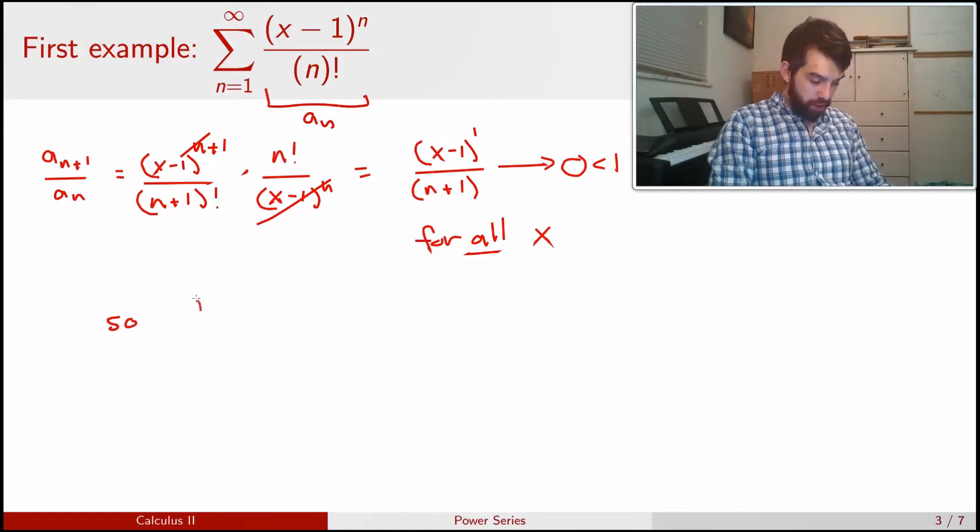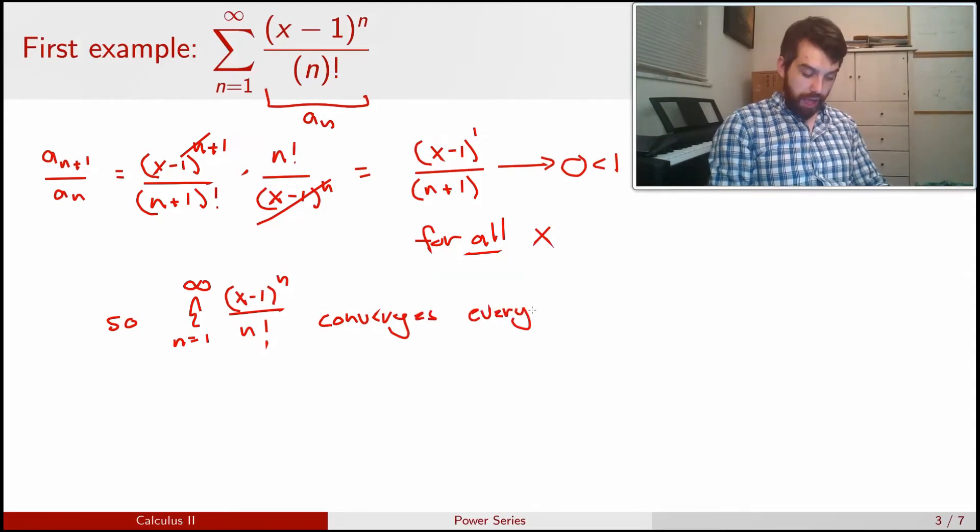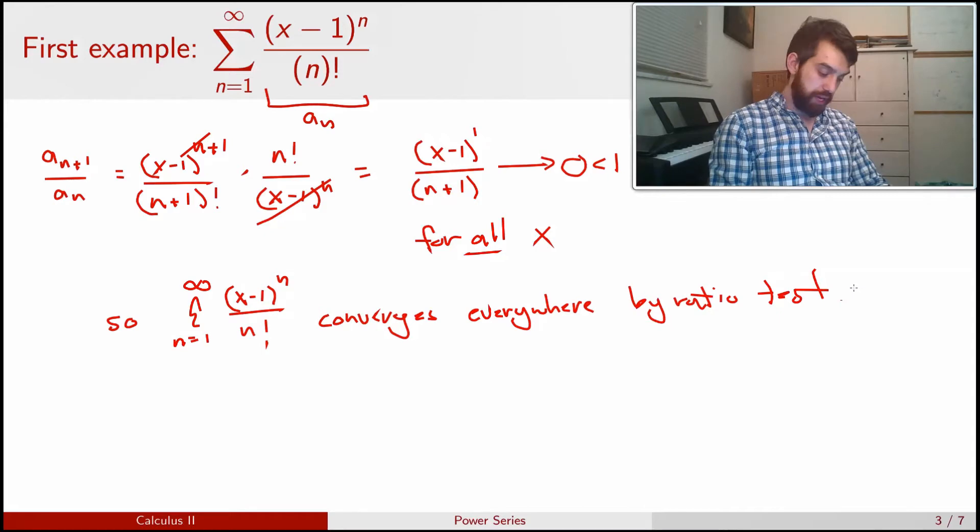So what do I determine? I determine that sum from n = 1 to infinity of (x - 1)^n divided by n factorial, it converges by the ratio test everywhere.